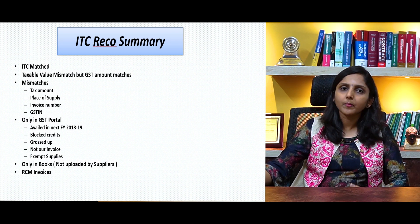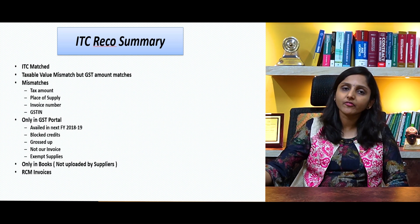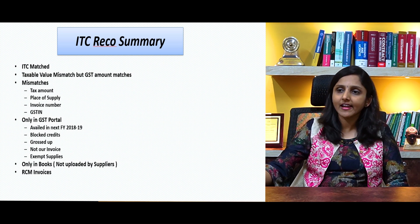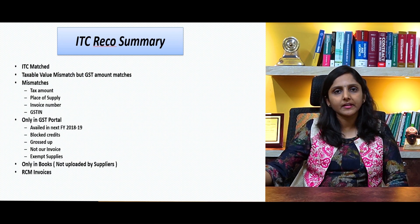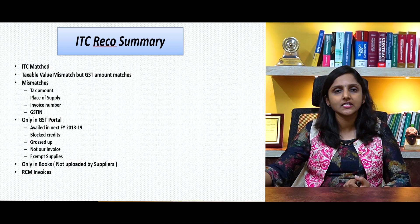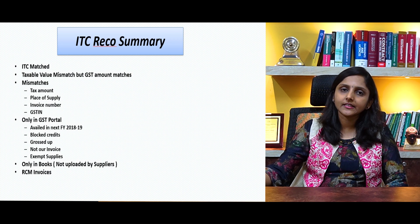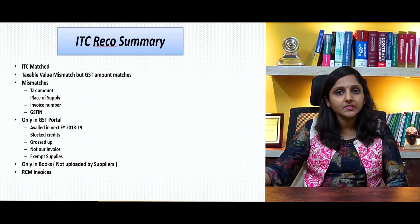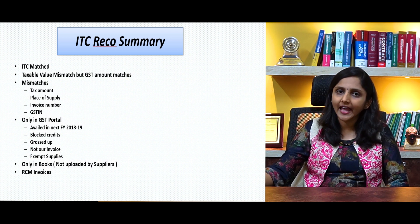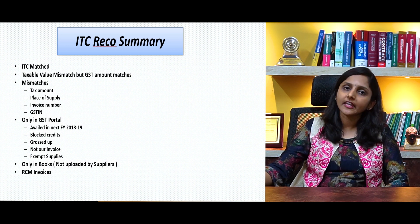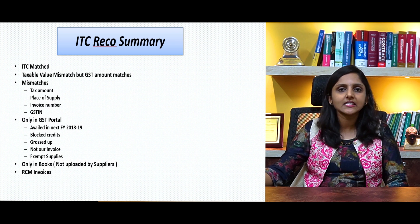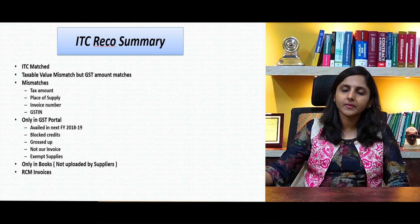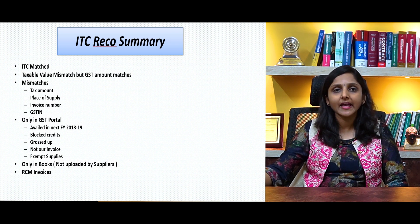The reasons for that could be: I probably accounted that in the next year and also availed it in the next year; some credits could be blocked credits, so I may not have availed them; some credits might have been grossed up by booking the entry in my accounts; the supplier has uploaded it wrongly to our GST and it is not our invoice; or the supplier has uploaded exempt supplies under the B2B supplies, so although there is no tax amount reflecting, taxable value could appear there.